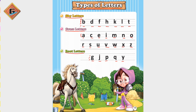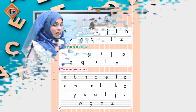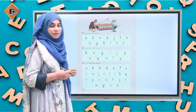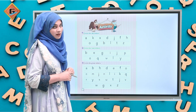The next page is page number 16 and we have an activity. We will review these letters. Some letters are given. In some areas we need to circle the sky letters, in some areas we need to circle the roots, and in some areas we need to circle the grass letters. Before we start this activity, I will tell you a tip.